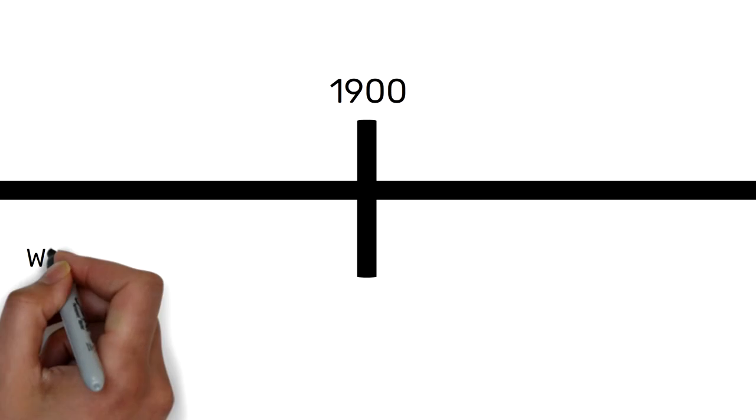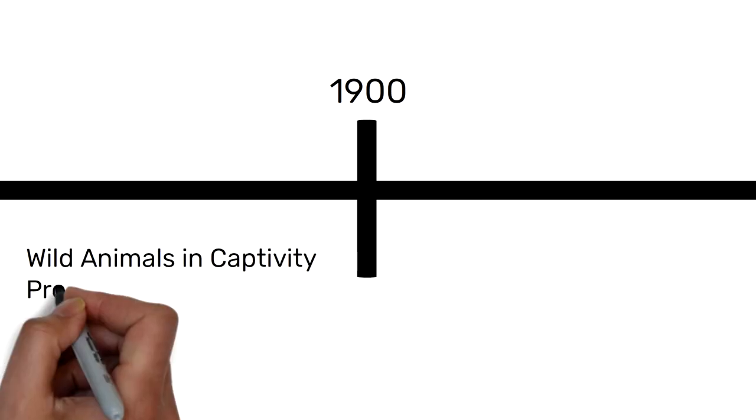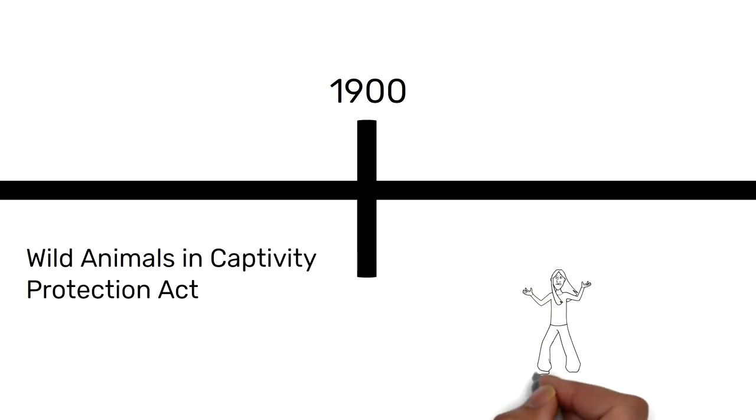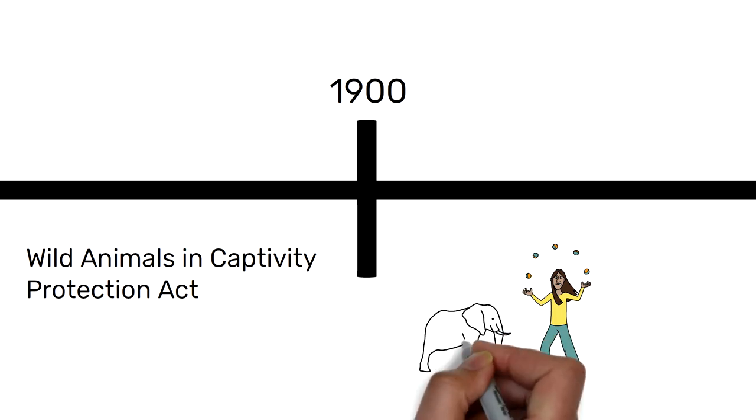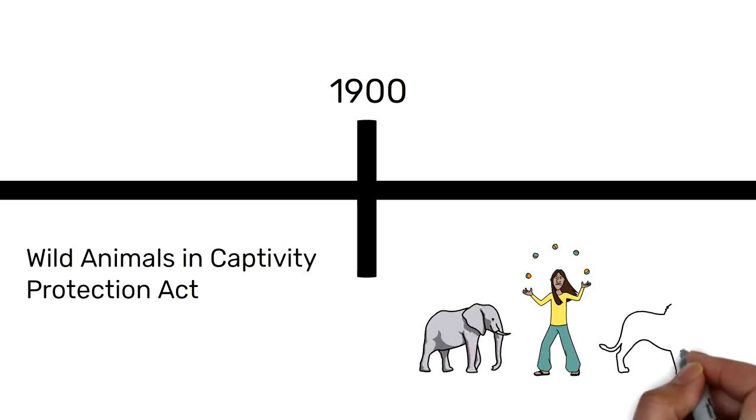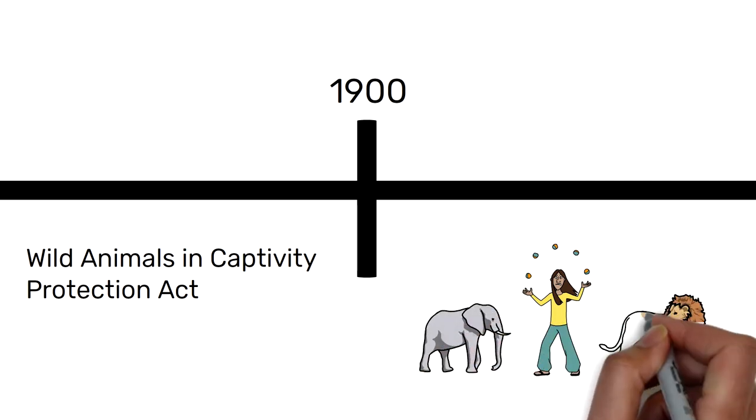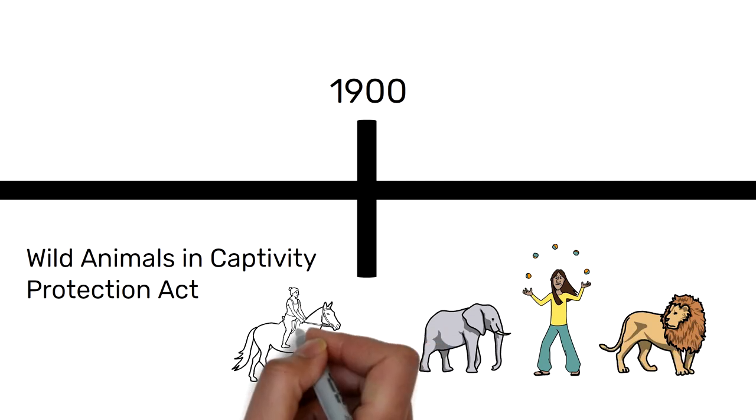In 1900, the Wild Animals in Captivity Protection Act was brought about. At this time, circuses were very popular and animals may be whipped, harmed, or held captive, and this act ensured that they were being looked after.